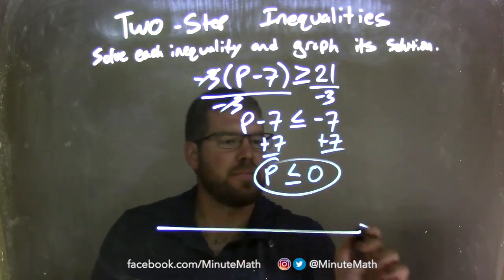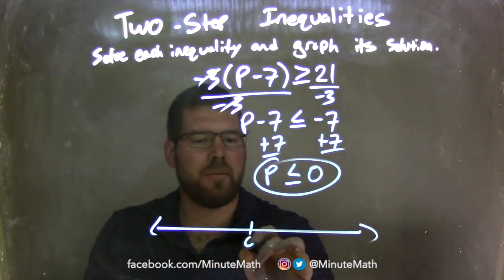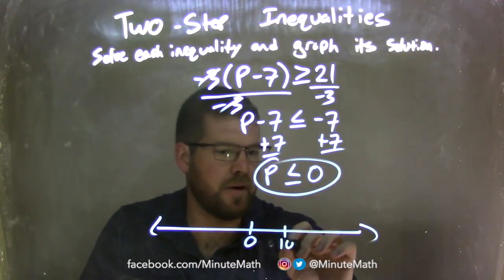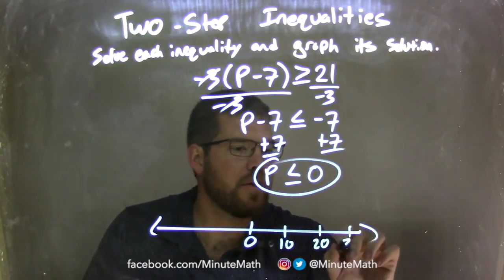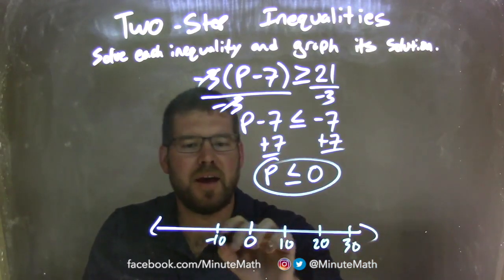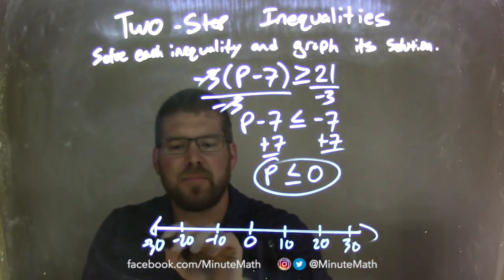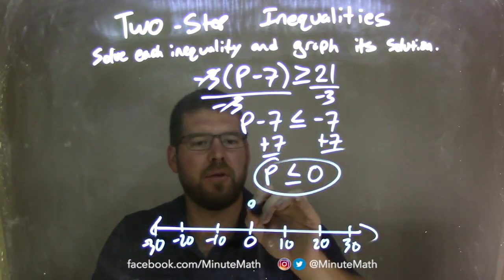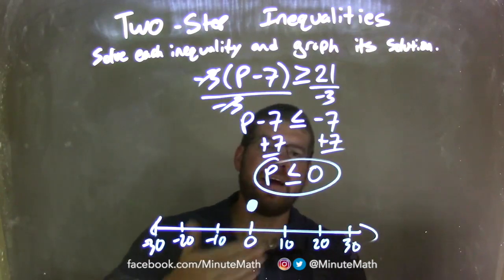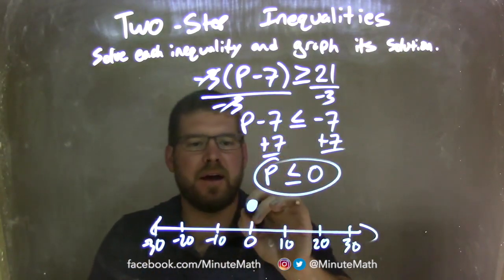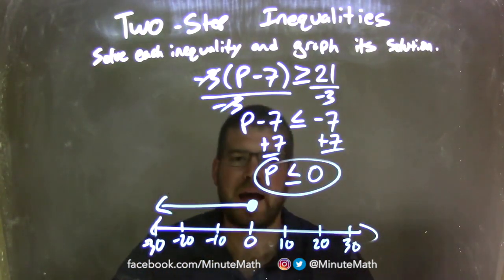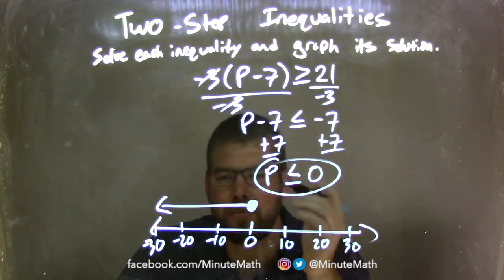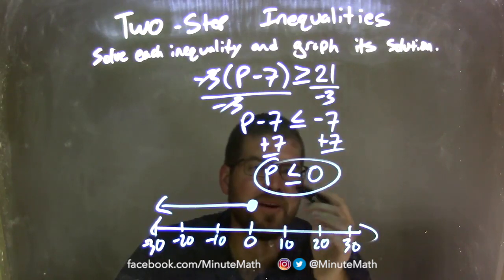Now I need to graph it. Let's put 0 in the middle and go by 10s: 10, 20, 30, and negative 10, negative 20, negative 30. If P is less than or equal to 0, at 0 I have a closed circle. Since it's less than, my arrow goes to the left. We have a graph that represents all the values P can be, which are P is less than or equal to 0.